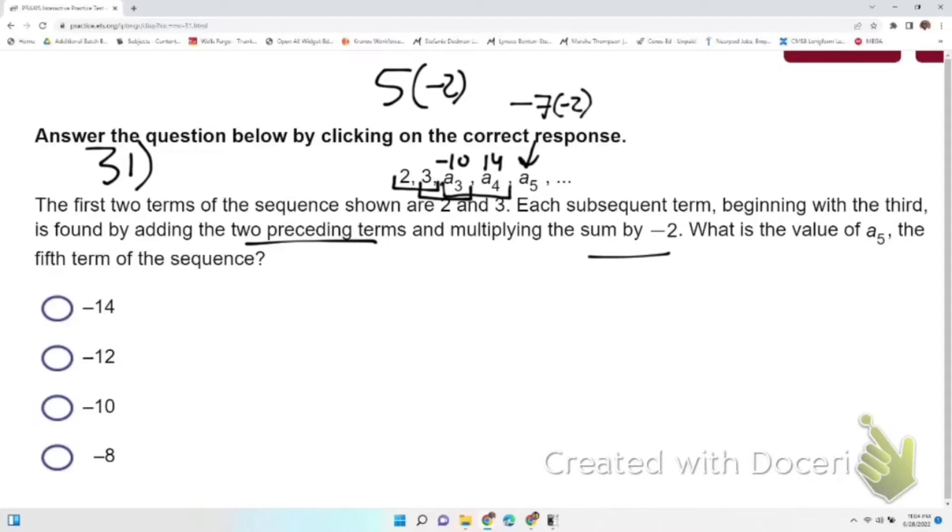Okay, now we're going to do that one more time to get our fifth number. So we add those two together, we get 4 times negative 2. That gives us negative 8, and negative 8 is our answer.